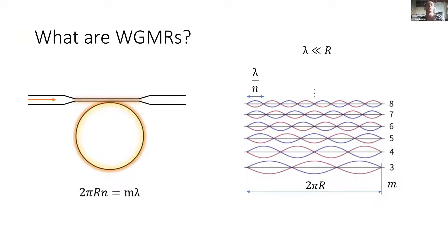Whispering gallery mode resonators are small structures, usually a few micrometers. These are the round structures here that are coupled with the tapered fiber. We guide light through the tapered fiber and some of the light can squeeze in the resonator.